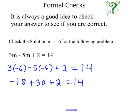So negative 18 plus 30 is 12, and 12 plus 2 is 14. Now because the left-hand side and the right-hand side are both equal to 14, I know I'm correct.